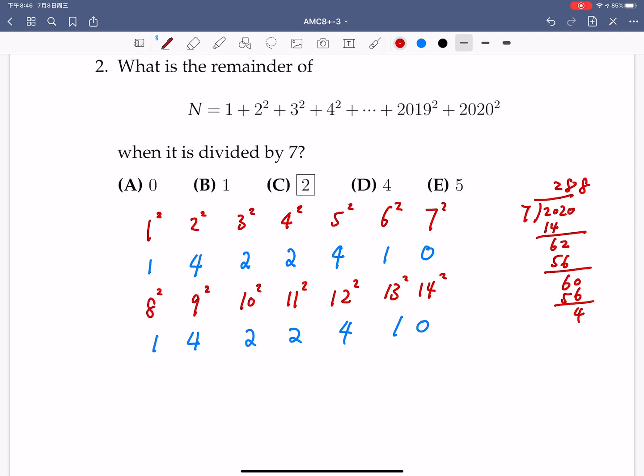So let's compute the summation of these remainders. 1 plus 4 is 5, it's 7, 9, 13, 14. So you add them together, you will get 14. And the 14 is divisible by 7. So this tells us the first seven terms adding together is actually divisible by 7. The next seven terms adding together is again divisible by 7.